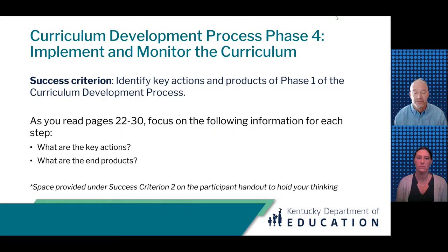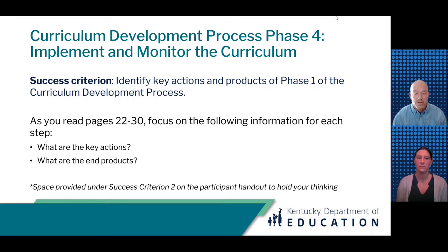We want to pause and give you a chance to read through Phase 4. As you read, focus on the key actions and products of each step of the phase. If accessing the electronic version, go to the table of contents in the CDP document and click on Phase 4 to get to the start of this section. Feel free to annotate directly on the text, and space is provided under Success Criterion 2 on the participant handout to capture your thinking. Focus on the text and the key questions for each step. Pause the video and restart after you have read Phase 4.